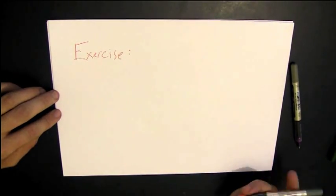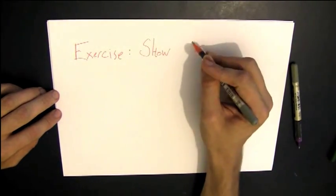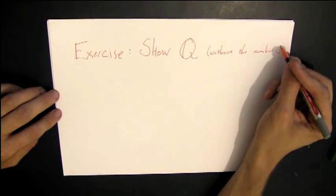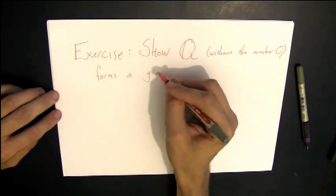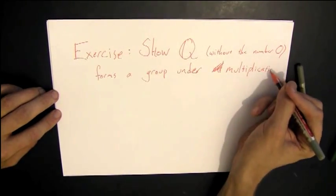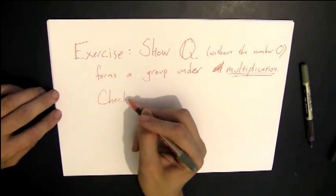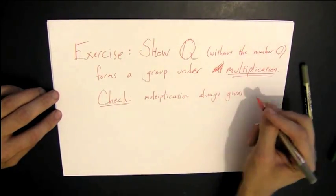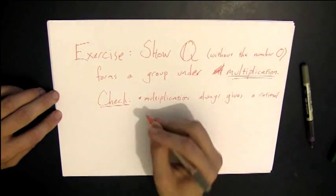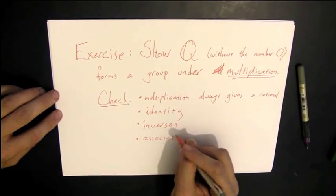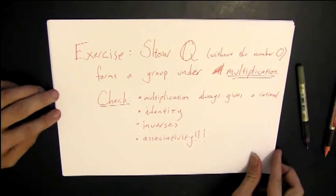So here's an exercise. Take the rational numbers and get rid of the number 0, so all of the rational numbers except for 0, and show that the rationals form a group under multiplication. To check that something is a group, you need to show four things. So you have to check that multiplication always gives you another rational number back. You're going to have to check that there's an identity, that inverses exist, and that the multiplication is associative.